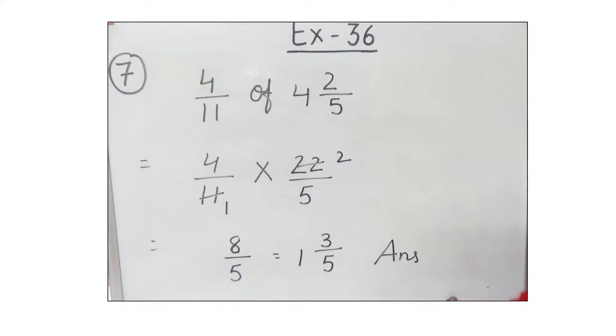I am explaining this with another example: 4 by 11 of the mixed numeral 4 and 2 by 5. First, convert the mixed numeral to an improper fraction. 5 times 4 is 20, 20 plus 2 is 22, giving us 22 over 5.